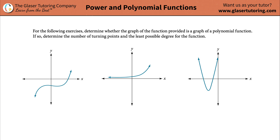For the following exercises, determine whether the graph of the function provided is a graph of a polynomial function. And if so, determine the number of turning points and the least possible degree for the function.